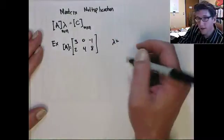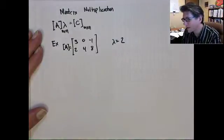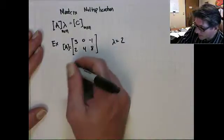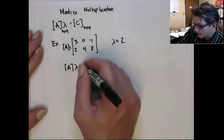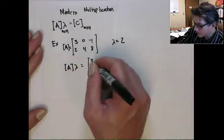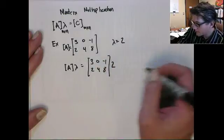Let's use that as A. We'll set lambda equal to 2. So I don't have to do too much math in my head. And then the result A times lambda is going to be 3, 0, minus 1, 2, 4, 8, times 2.